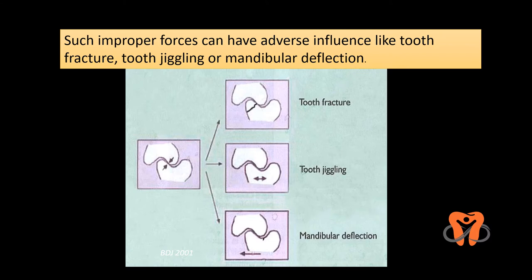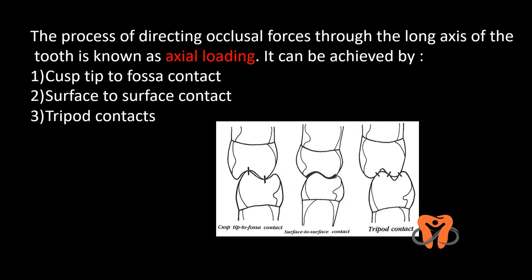Improper forces can have adverse influences like tooth fracture, tooth jiggling, or mandibular deflection — meaning your mandible deviates slightly during mouth closure. The process of directing occlusal forces through the long axis of the tooth is known as axial loading. We can achieve this by making cusp tip to fossa contact, surface to surface contact, or tripod contacts. Developing cusps in this manner means occlusal forces will most probably be directed along the long axis of the tooth.